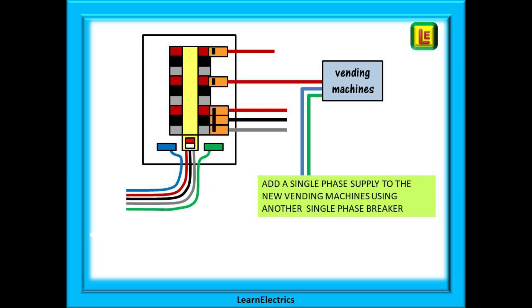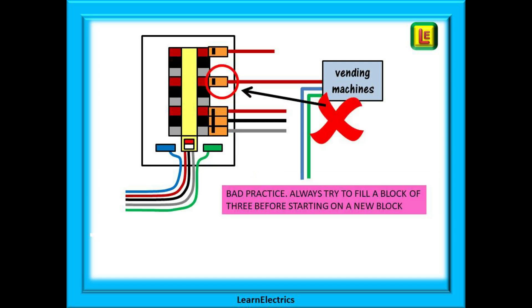Let's now add another single-phase circuit, perhaps for the vending machines in the new rest area. Again, we need a circuit breaker, a phase, a neutral and an earth. And we have connected the new breaker into the brown phase on another way or block. This is wrong. This is bad practice. Whilst the regulations do not forbid this, good working practice tells us that we should always try and fill up a way or block of three before starting a second block. The reason for this is that if we have single-phase breakers randomly spread around the distribution board, we may end up with no empty blocks of three when we need to install a new piece of three-phase equipment. Always try and work in threes.